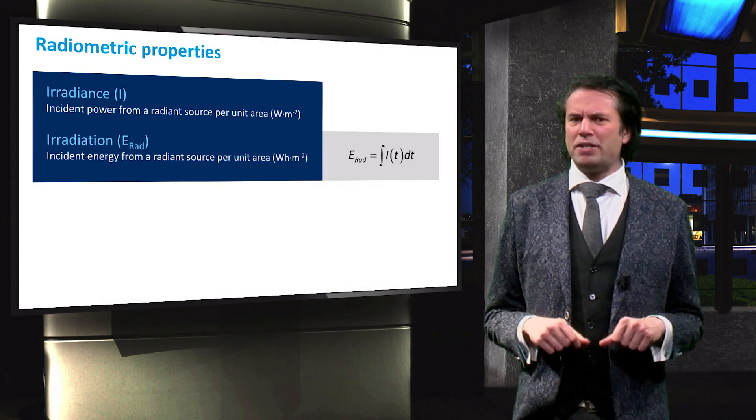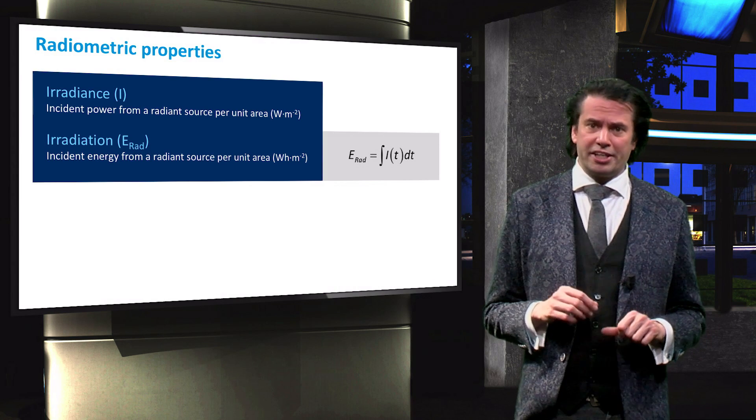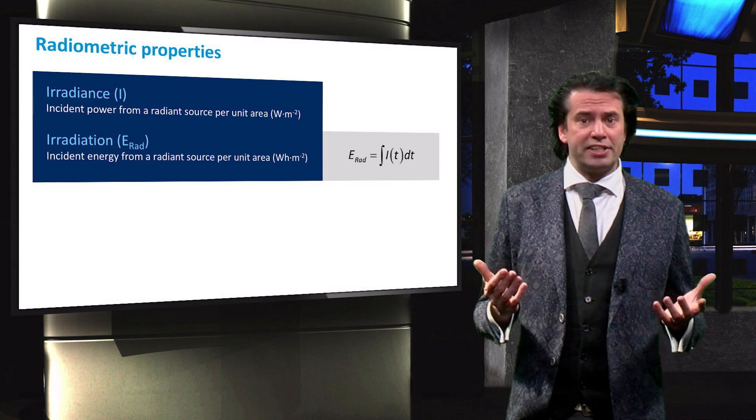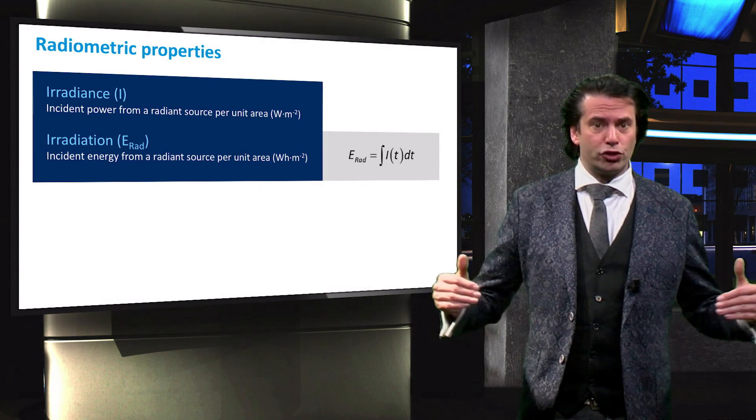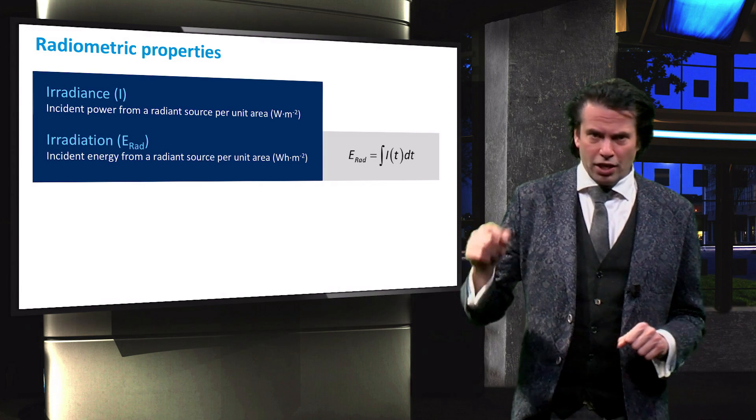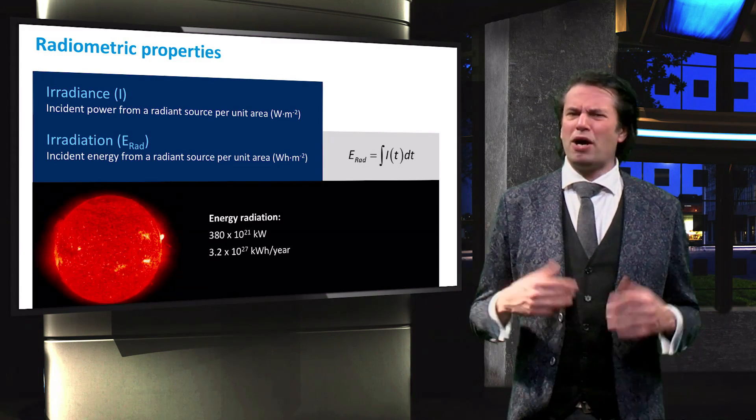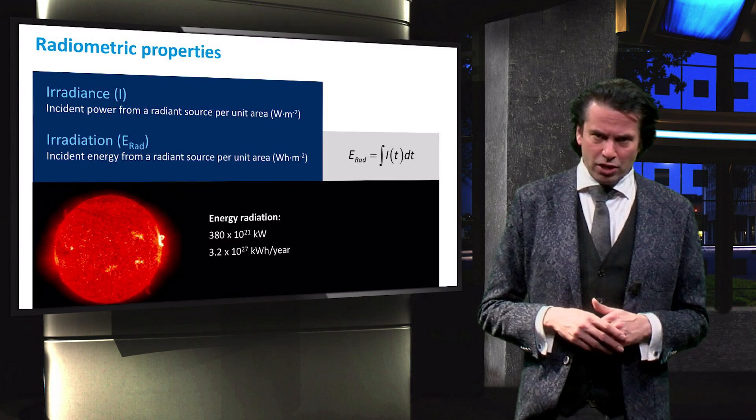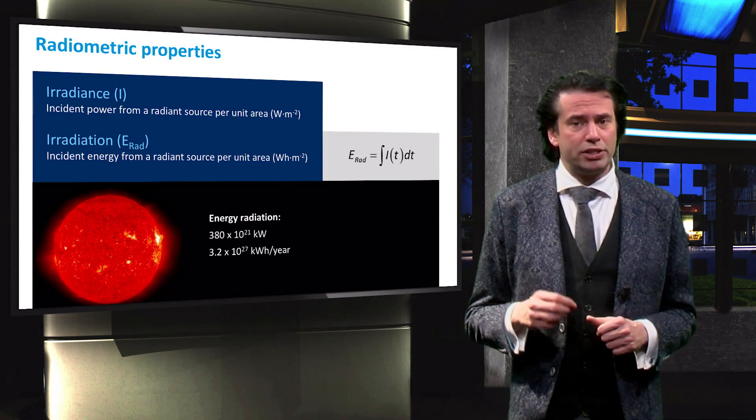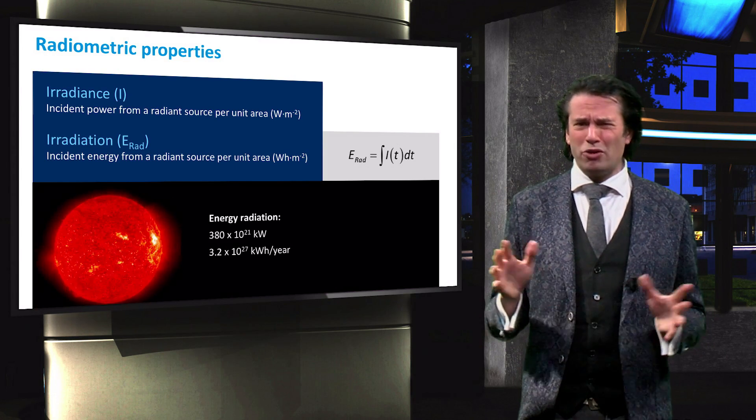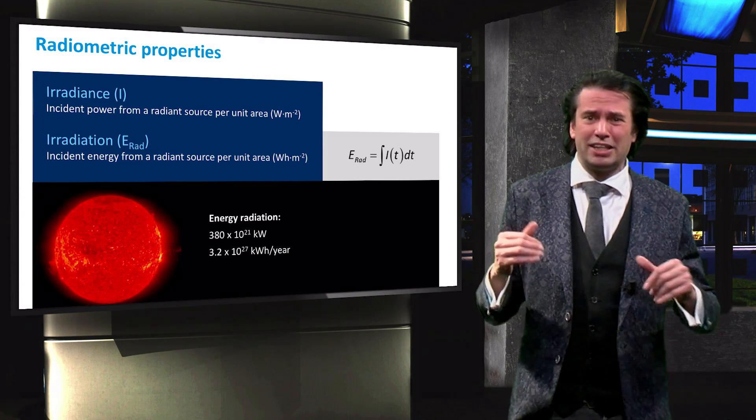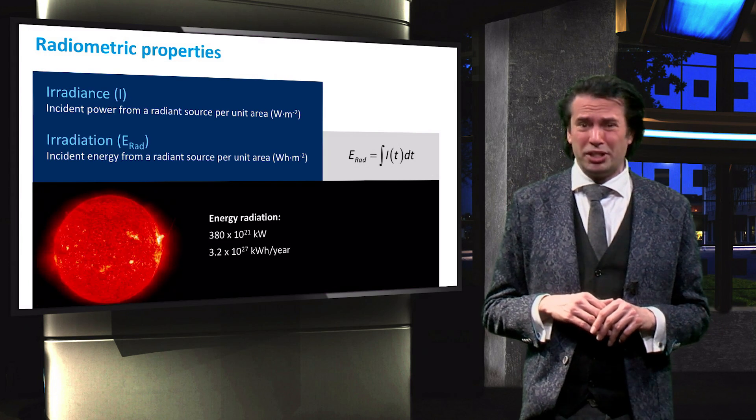Since power can be defined as energy per unit time, the irradiation can be obtained by integrating the irradiance over a certain time interval. The power emitted by the sun amounts to about 380 times 10 to the power 21 kW, which amounts to about 3.2 times 10 to the power 27 kWh per year.